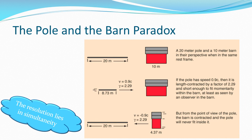At 0.9c, our 20-meter pole contracts to about 8.73 meters. Will an 8.7-meter pole fit inside a 10-meter barn? Yes. But from the pole's point of view, the barn is coming at it at 90% the speed of light, so the barn contracts to 4.37 meters. Will a 20-meter pole fit inside a 4.37-meter barn? Obviously not. So how do we resolve this paradox?